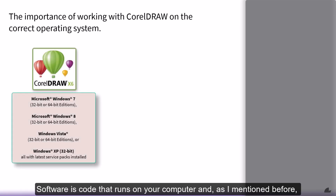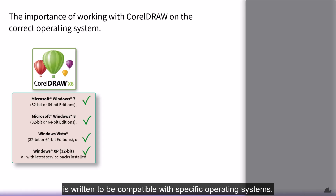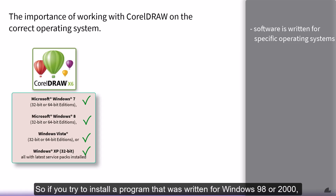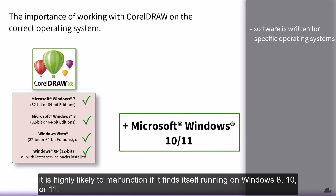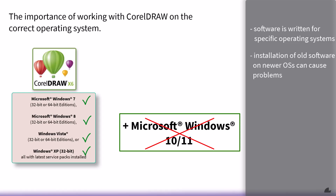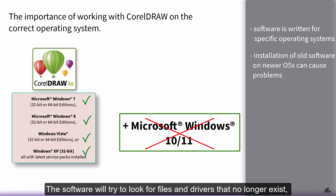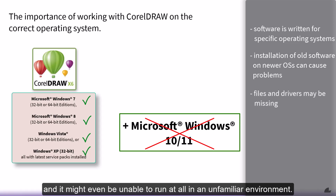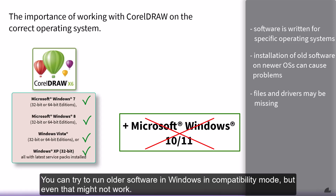Software is code that runs on your computer and is written to be compatible with specific operating systems. So if you try to install a program that was written for Windows 98 or 2000, it is highly likely to malfunction if it finds itself running on Windows 8, 10, or 11 — if you can get it installed at all. The software will try to look for files and drivers that no longer exist and might even be unable to run at all in an unfamiliar environment.